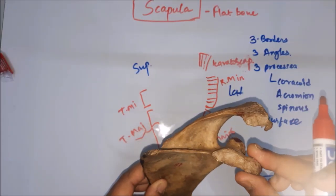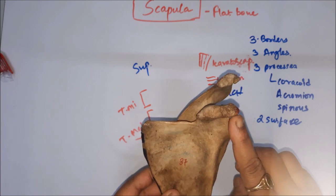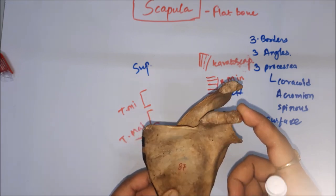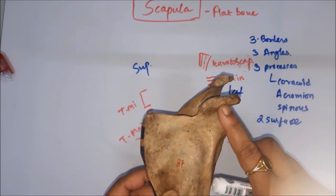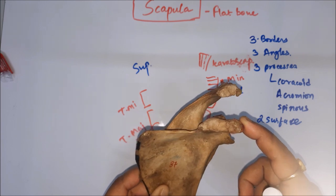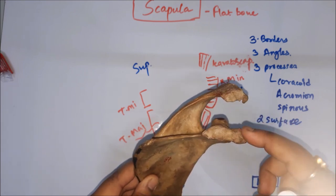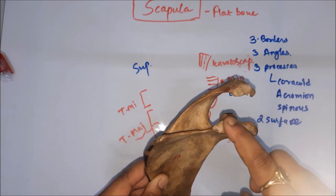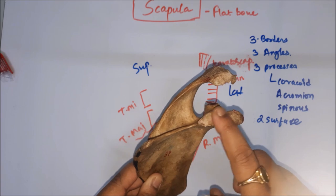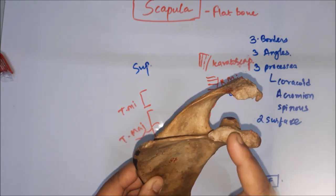On the coracoid process: on the tip, at the medial side there is attachment of coracobrachialis muscle, and on the lateral side there is attachment of the short head of biceps. On the medial border there is attachment of pectoralis minor — so three muscles are there. It also gives attachment to three ligaments: the coracoacromial ligament on the superior surface, the coracoclavicular ligament (conoid and trapezoid parts) on the posterior side, and the coracohumeral ligament connecting with the humerus.